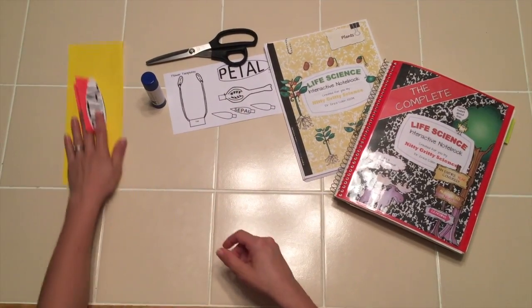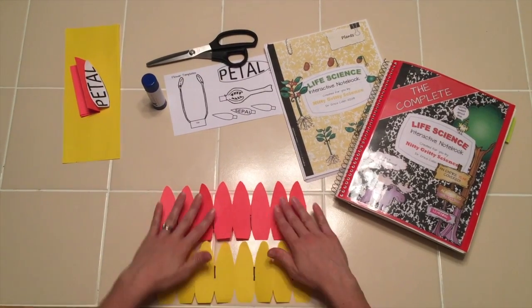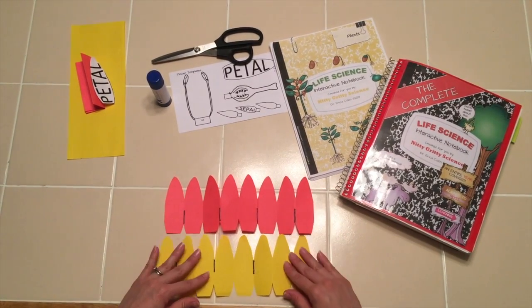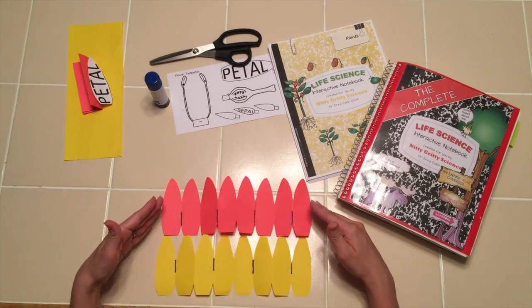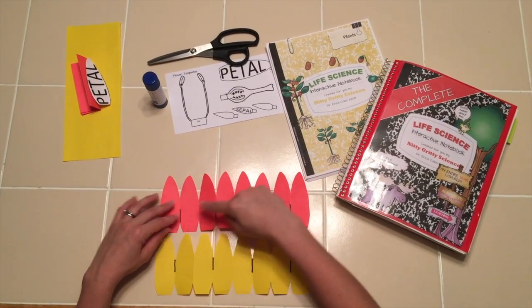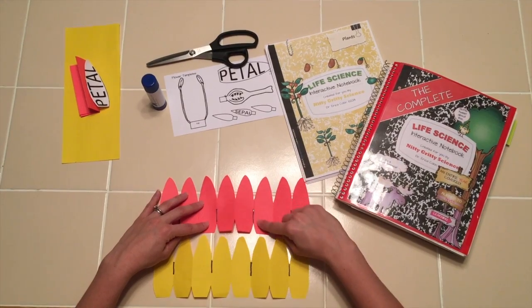When we have that cut, this is what you end up with right here. I'm going to use two different colors, just so when we put the model together, you can see the two halves. On the first half, you want to draw a line from the middle going down on every other petal, as I've done here.